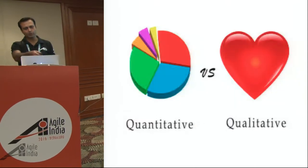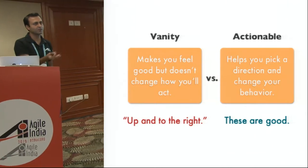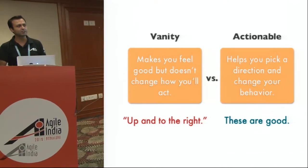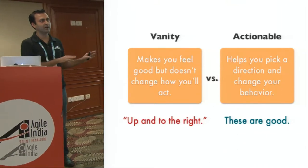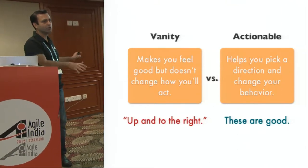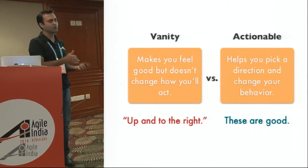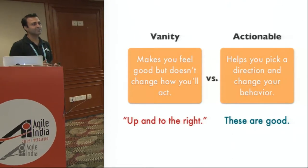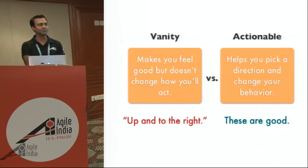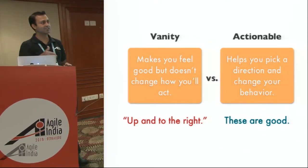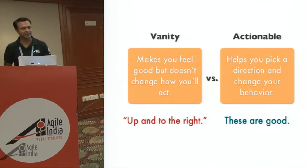The other good definition is vanity versus actionable metrics. Vanity metrics are typically more for PR — 'we've reached 100,000 downloads.' It's good for PR, but actionable metrics are something internal: 'I need to improve on this, otherwise I'm screwed.' That is an actionable metric for you, because 100,000 downloads doing nothing is not really there.